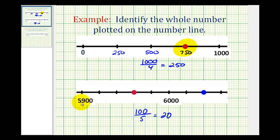So starting at 5,900, we'd have 5,920, 5,940, 5,960 here, 5,980, and 6,000.